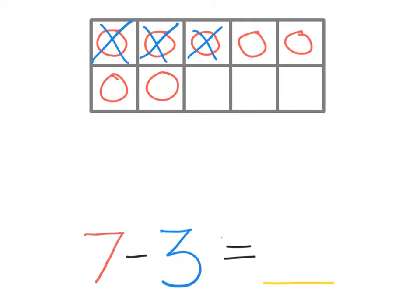Now we need to count how many we have left. We have 1, 2, 3, 4 circles left. And that is our answer. So we can read our equation or number sentence as 7 minus 3 equals 4.